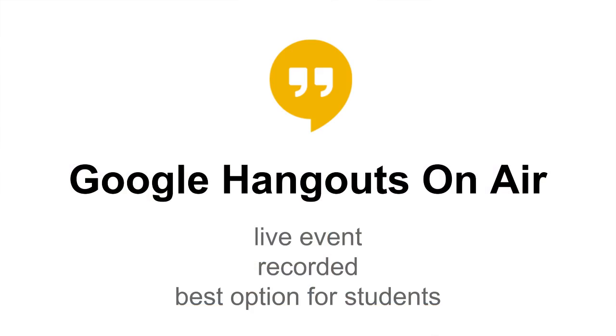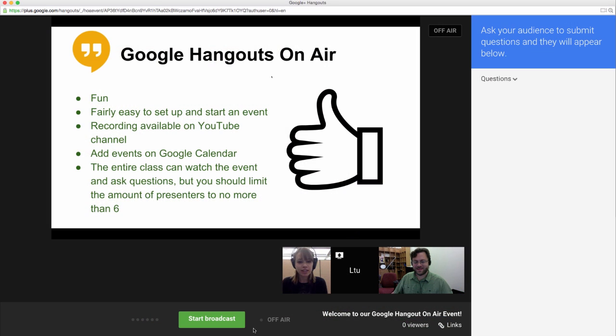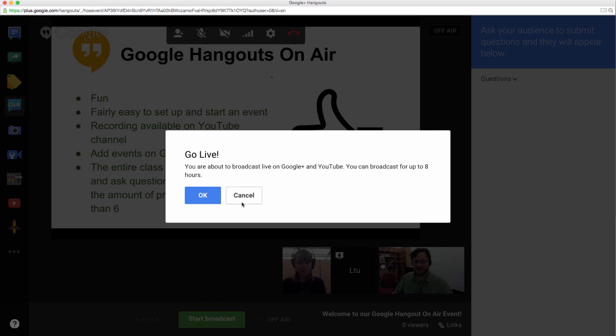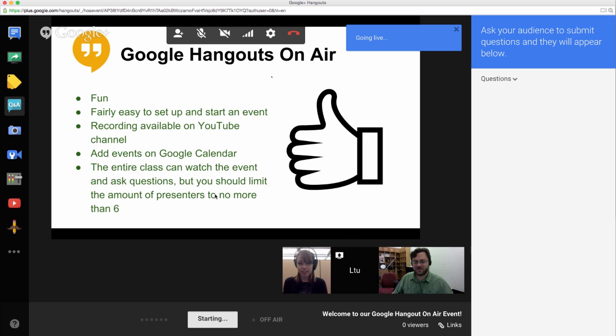Let's start with the first tool, and that's Google Hangouts on Air. Google Hangouts on Air can do pretty much everything you need it to do. It's really a live event that's broadcasted on YouTube. The event can be viewed by the entire class live, and at the same time the event is being recorded and will be made available on YouTube after the broadcast.